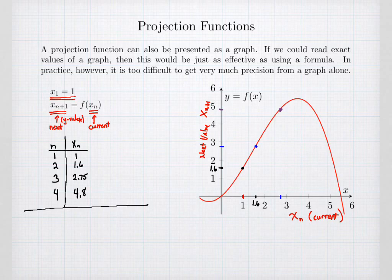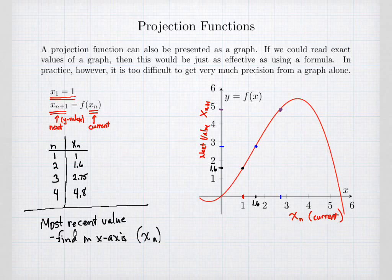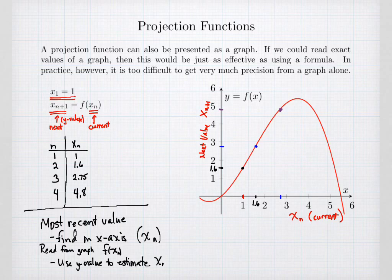To summarize the graphical steps: take the most recent sequence value and find it on the x-axis. Then read from the graph the function value at that point, using the y-value to estimate the next value x_{n+1}. This is how a graph can be used to generate a sequence.